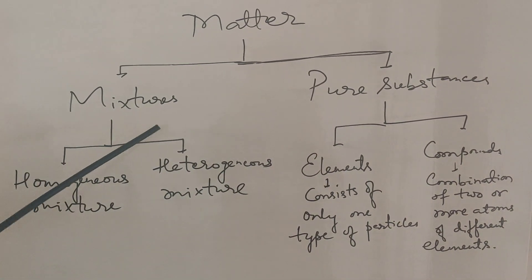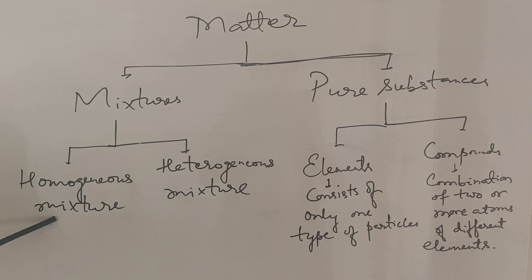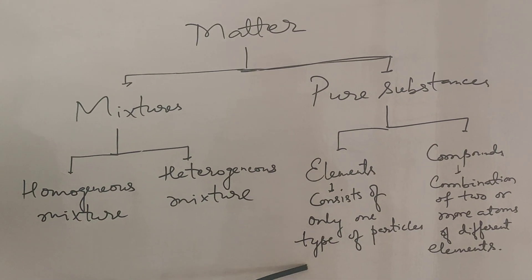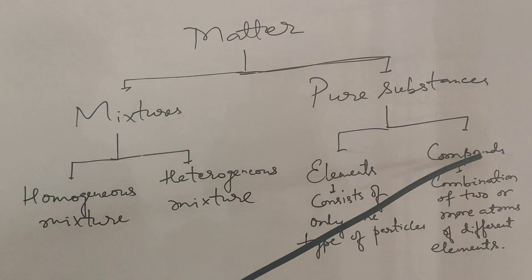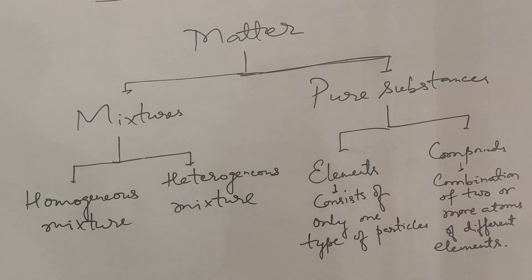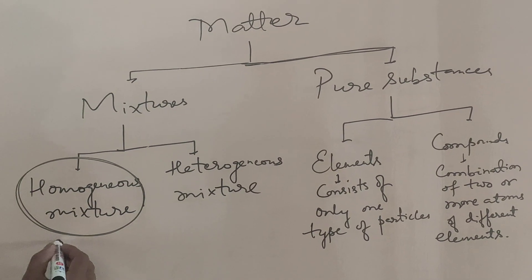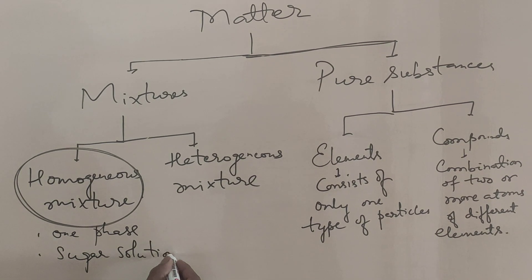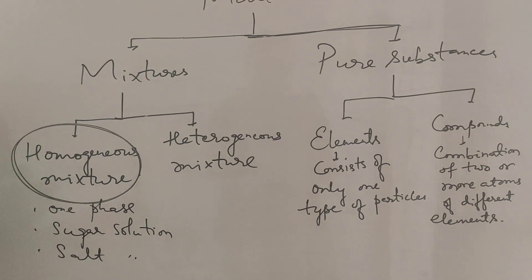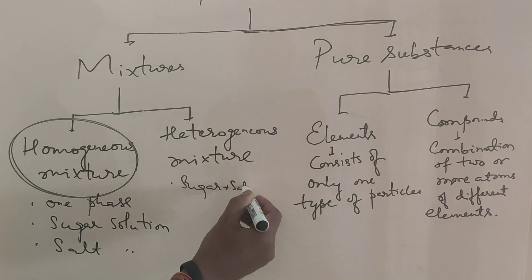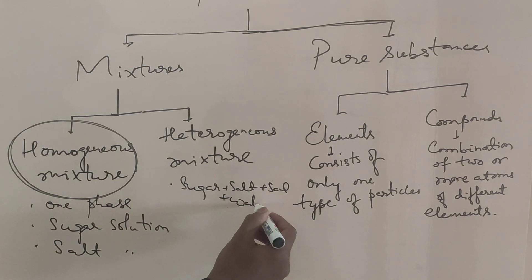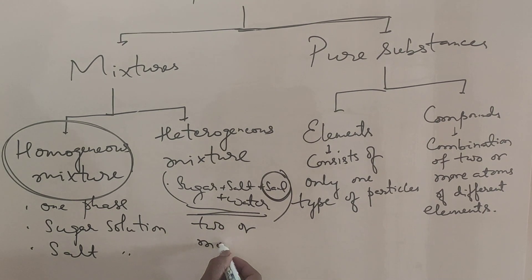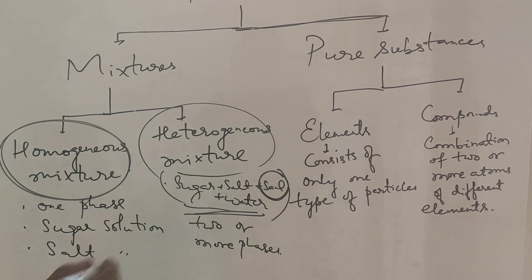Matter is classified into two types: mixtures and pure substances. Mixtures are broadly classified into homogeneous and heterogeneous mixtures. Pure substances are of two types: elements and compounds. Elements consist of only one type of particle; there are nearly 120 elements in the periodic table. A homogeneous mixture has one phase — for example, sugar solution or salt solution. A heterogeneous mixture has two or more phases, such as sugar, salt, sand, and water mixed together.